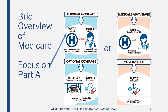This slide shows an overview of the various parts of Medicare and the options you have in choosing how you want to obtain Medicare insurance. In general, there are two paths you can take: Original Medicare on the left, or Medicare Advantage on the right. The key parts of Medicare are Part A, Hospital Coverage; Part B, Medical Coverage; Part C, Medicare Advantage; Part D, Medicare Prescription Coverage; and Medigap, Medicare Supplemental Coverage.